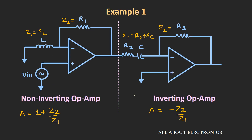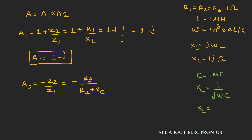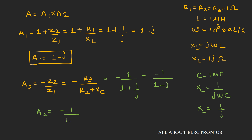Similarly, for the inverting op-amp, the gain A2 will be equal to minus Z2 divided by Z1, that is equal to minus R3 divided by R2 plus Xc. The value of the capacitor is 1 microfarad, so Xc can be given by the expression 1 divided by j times ωC. If we put the value of ω and C, the value of Xc comes out as 1 divided by j. So putting all values, we get minus 1 divided by 1 plus 1 divided by j, which equals minus 1 divided by 1 minus j. So A2 is equal to minus 1 divided by 1 minus j.